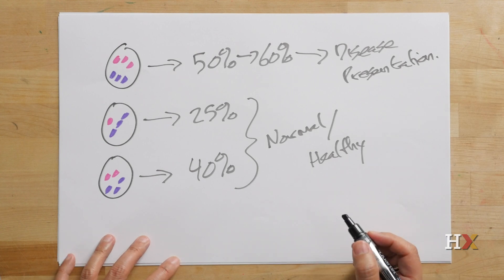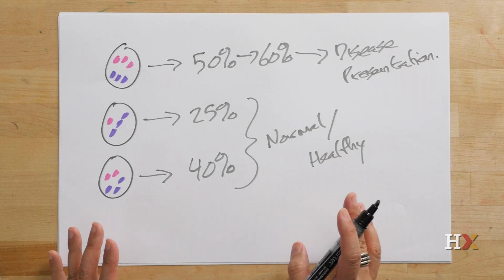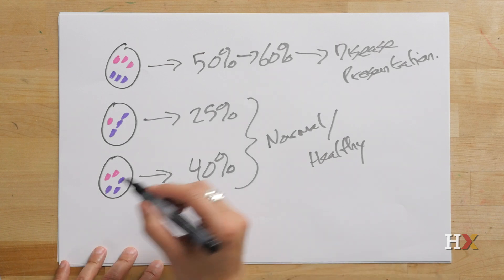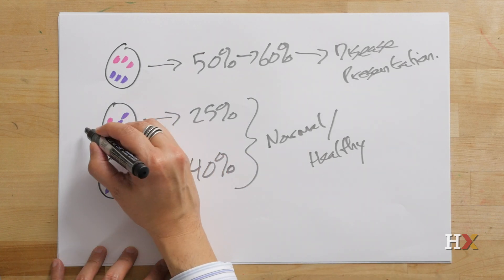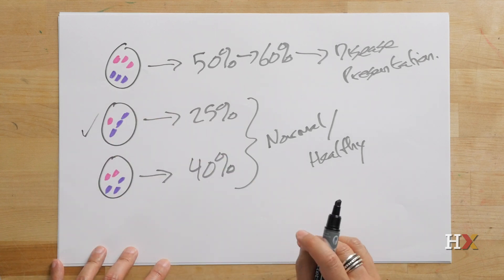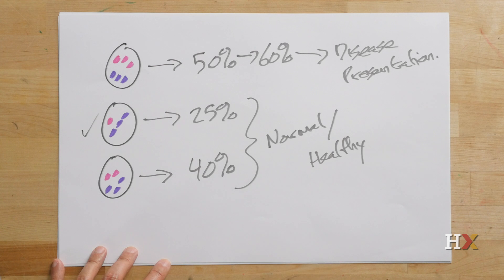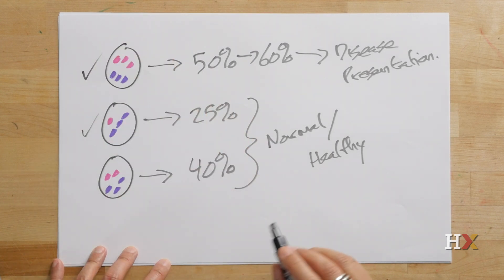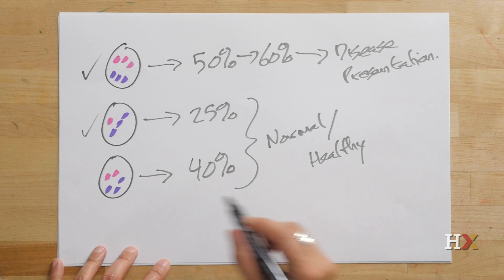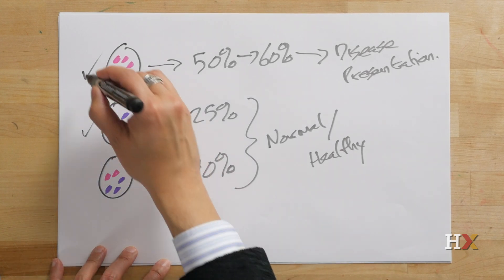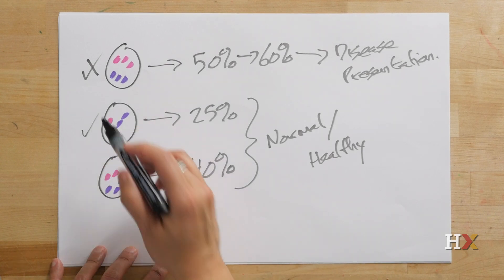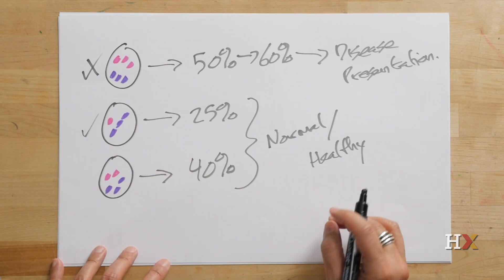So what this means is that you can have siblings in the same family. You might have one sibling where the egg that was fertilized had 25% of the mitochondria carrying the defect, while another egg was fertilized for a different sibling that had 50% or more. This individual up here will show the disease phenotype, while this individual will be entirely healthy.